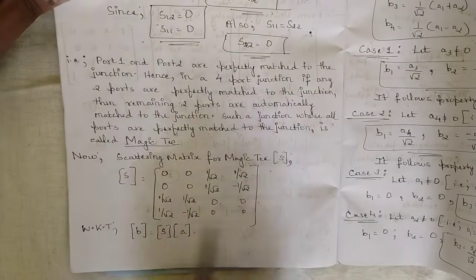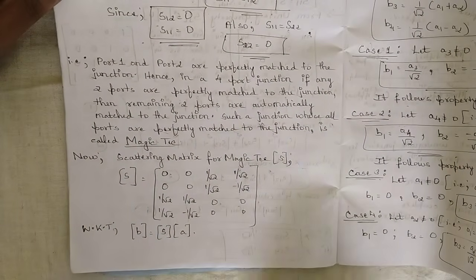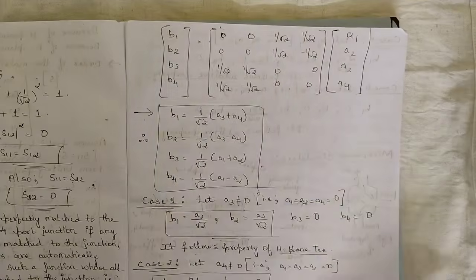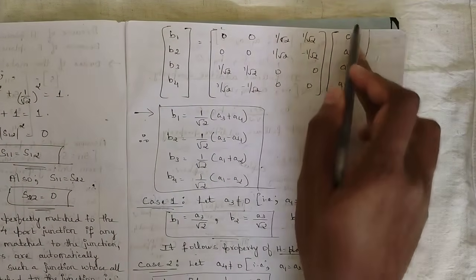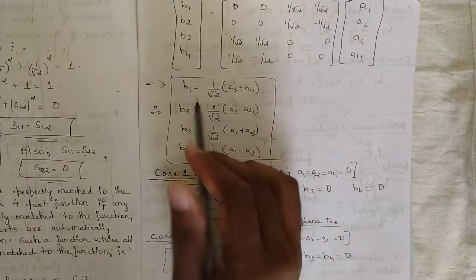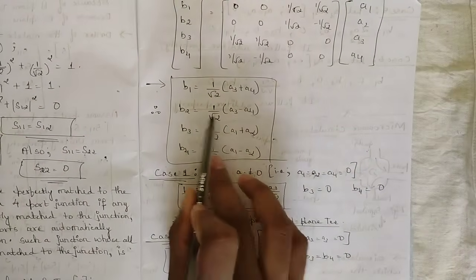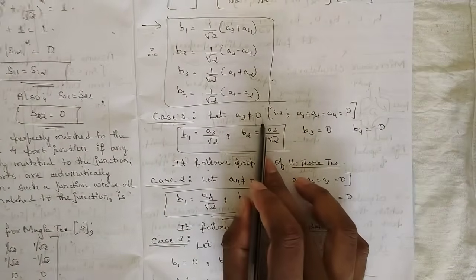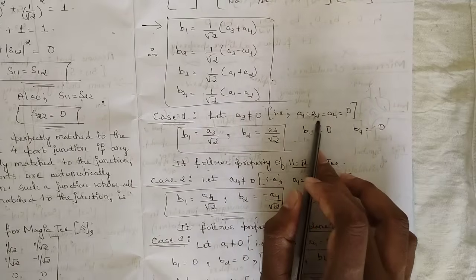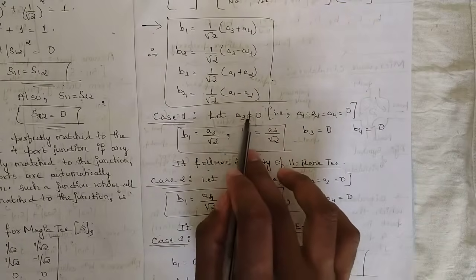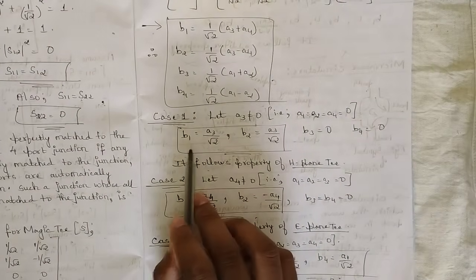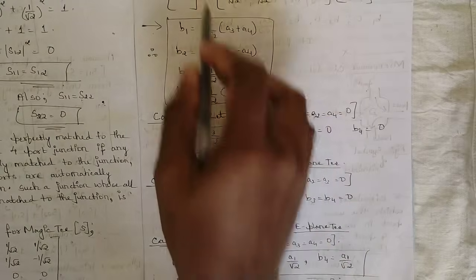The scattering matrix of Magic T is now fully defined. Using b = S·a and writing out b1, b2, b3, b4 in terms of a1, a2, a3, a4, we get: b1 = (a3 + a4)/√2, b2 = (a3 − a4)/√2, b3 = (a1 + a2)/√2, b4 = (a1 − a2)/√2. Case 1: if a3 ≠ 0 and a1 = a2 = a4 = 0, then b1 = a3/√2 and b2 = a3/√2, with b3 = b4 = 0.